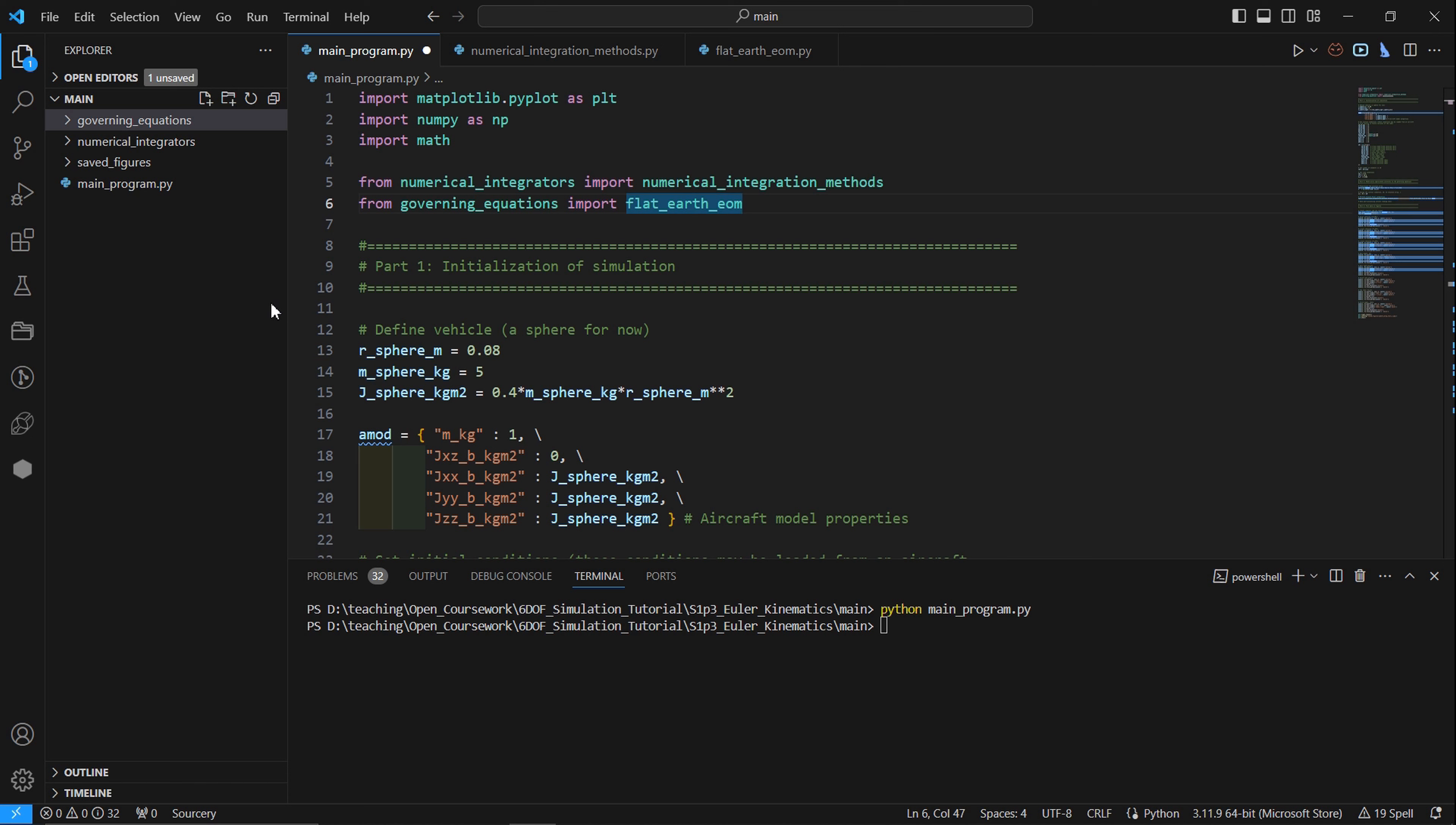Here we are in Visual Studio Code in the main program script. On the left-hand side, you can see the folders and the main program script in the main folder. We first import libraries, and then functions, and then we go on to the initialization. We call that part one.